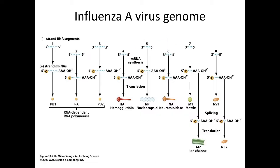Here again are the different proteins. Each one: the negative strand is copied into a positive strand, it has a cap and a poly-A tail added onto it, and then they all get translated. PB1, PA, and PB2 make the RNA-dependent RNA polymerase. The HA negative strand makes the hemagglutinin. The NP makes the nucleocapsid protein that coats the viral RNA. NA is the neuraminidase. There's a matrix protein and an M2 ion channel.